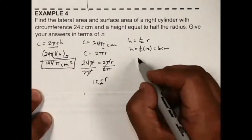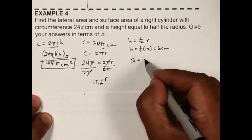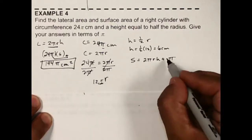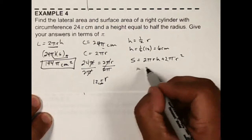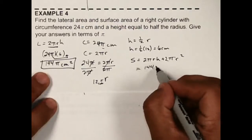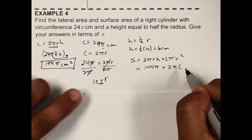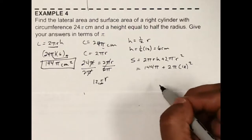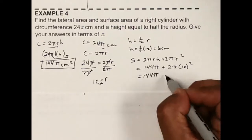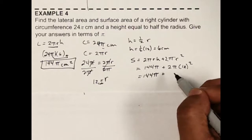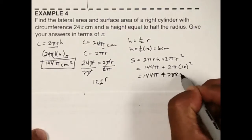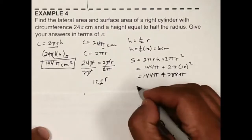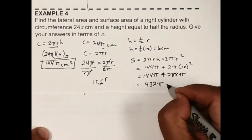Now find the total surface area: 2πrH plus 2πr squared. The first part we already solved — that's 144π — plus 2 times π times 12 squared. So 144π plus 2 times 144 is 288π. Adding those together gives 432π centimeters squared — that's my total surface area.